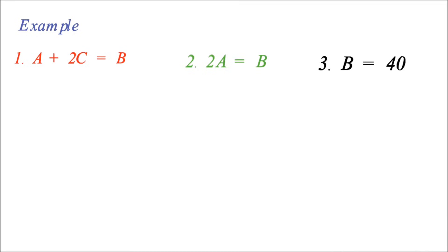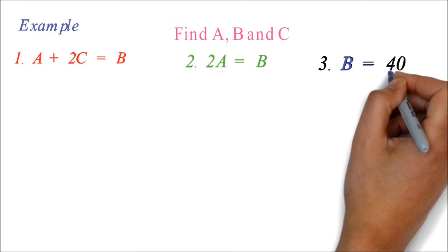We are assuming you read a word problem and these are the equations you got. We want to find A, B, and C. Here we notice that we know B to be 40.